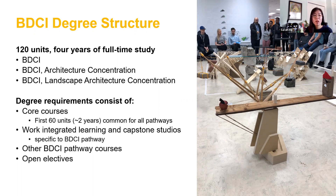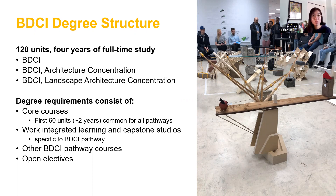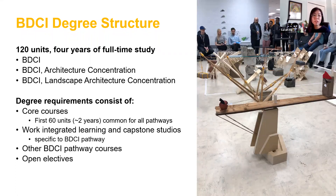Where it branches off is that every pathway will include work-integrated learning and capstone studios, but those are specific to the pathway you decide on. Aside from those two studios, you'll do some BDCI pathway courses specific to whichever pathway you choose. And then finally, for all three pathways, you will need to complete open electives, which is 15 units or five courses.